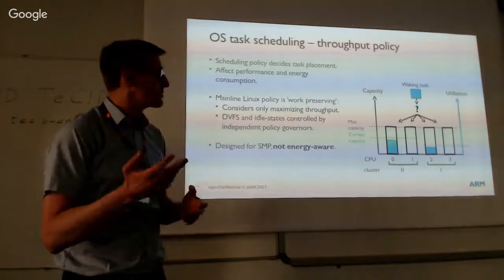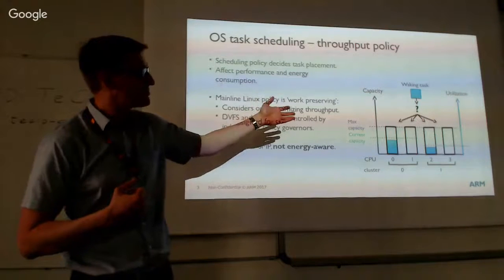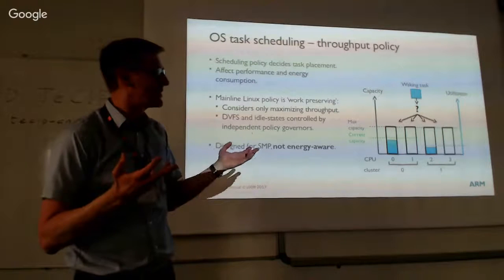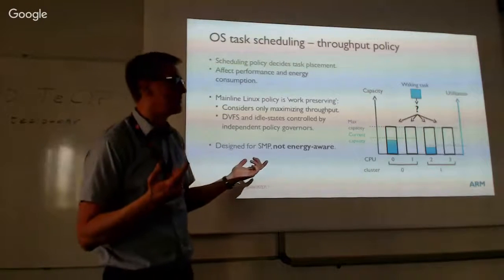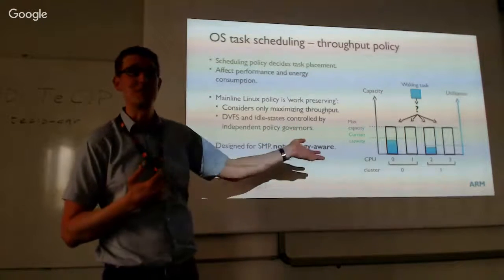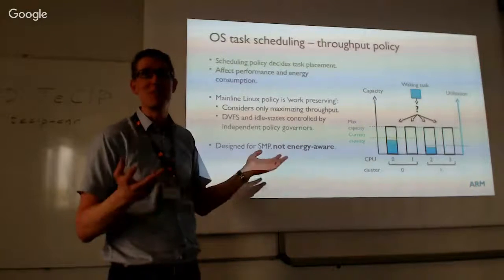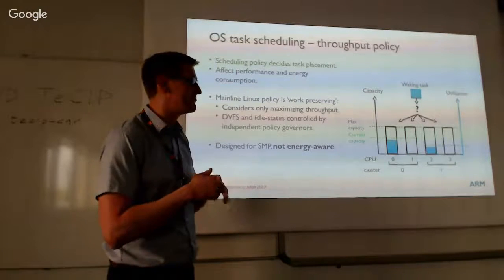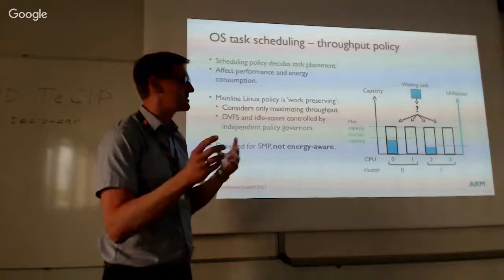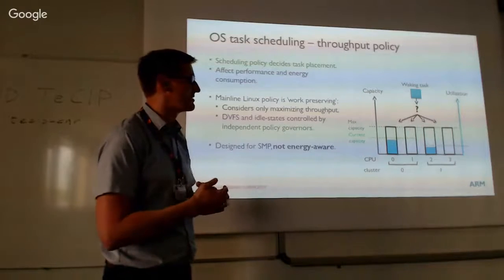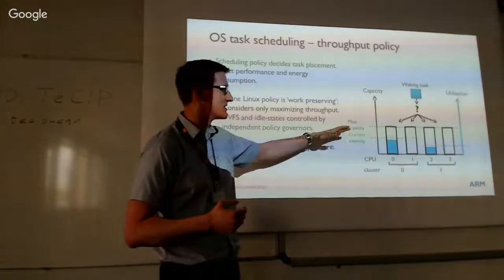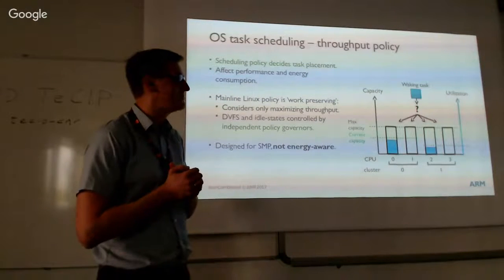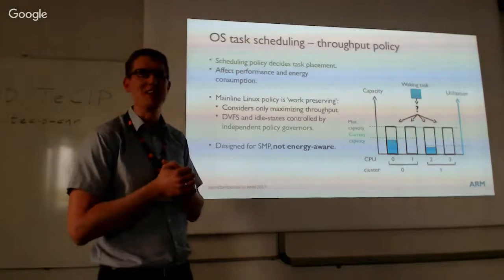The way it works today: I have an example on the right where we have a waking task. The scheduler basically just looks for an idle CPU and places the task there, which is fine if you only care about throughput on a symmetric SMP system. But if you take into account the current OPP — what frequency each CPU is running at — you might do better than just picking any idle CPU.